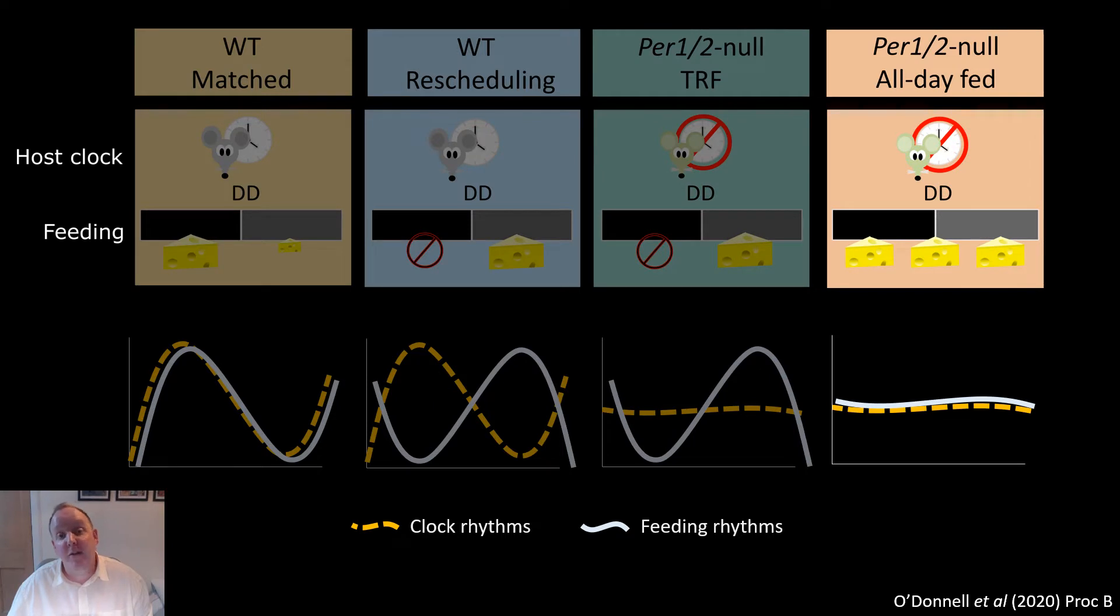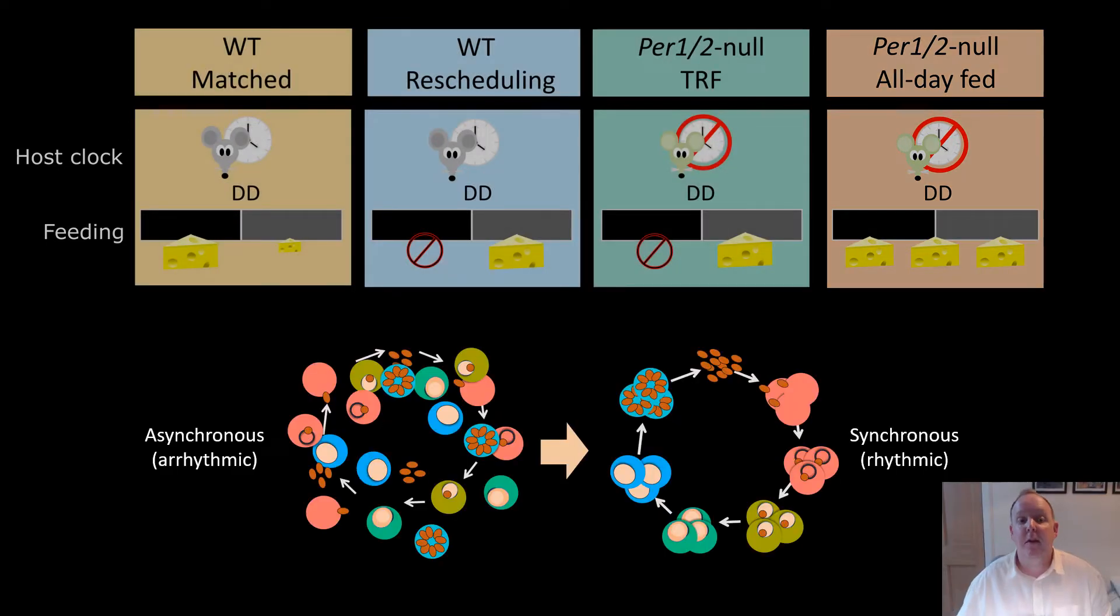And then our fourth group, the clock knockouts again, but this time we've given them ad lib access to food. So these mice will be arrhythmic both in host clock signals and in feeding.